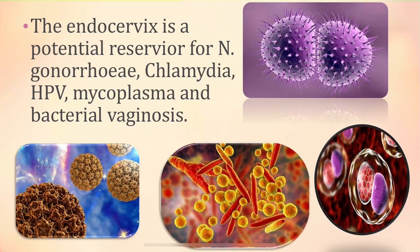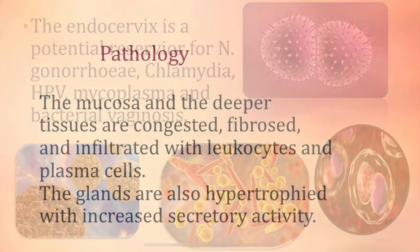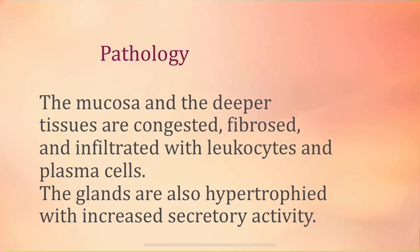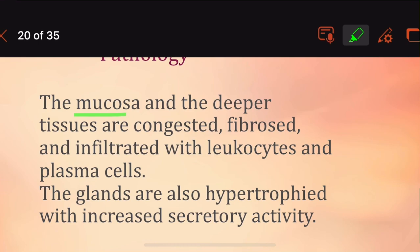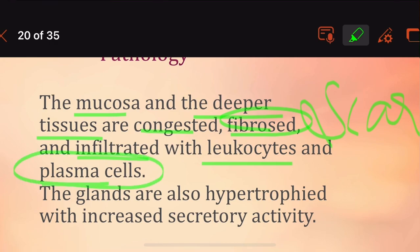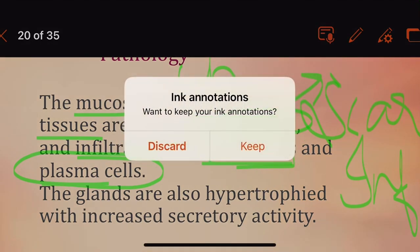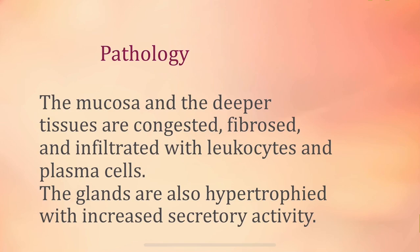In chronic cervicitis, the mucosa and deeper tissues become congested. Fibrosis occurs with scarring, and there is infiltration of leukocytes and plasma cells at the site. The glands become hypertrophied with increased secretory activity, resulting in increased mucopurulent discharges.